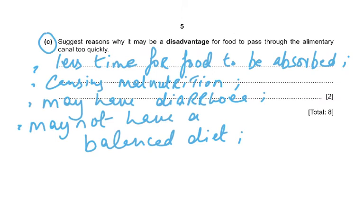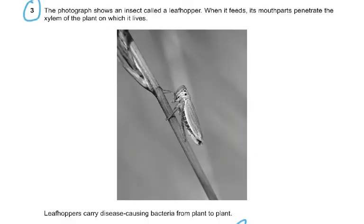Part C: suggest reasons why it may be a disadvantage for food to pass through the alimentary canal too quickly. Answers: less time for food to be absorbed, causing malnutrition; may have diarrhea — frequent passage of watery feces, causing dehydration; and the person may not have a balanced diet, resulting in less absorption and malnutrition.